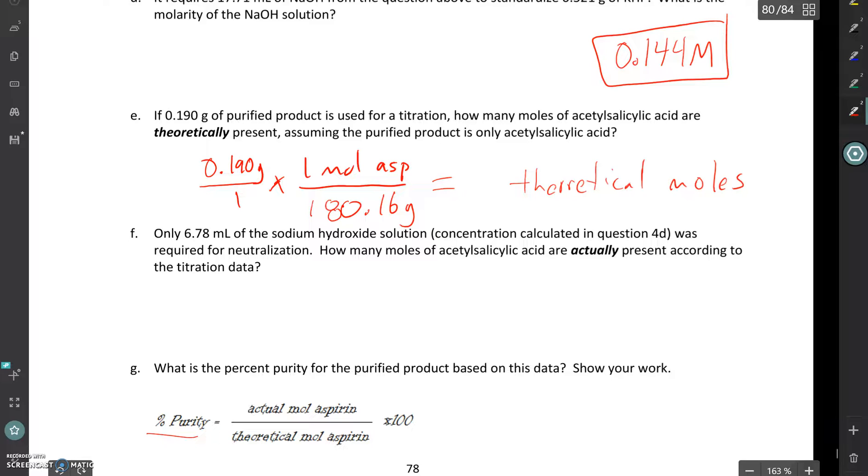So you can go through and do the calculation and be careful with sig figs. This is giving the theoretical number of moles that are present. If every last molecule that you are putting in for the titration, every last molecule of that 0.190 grams is aspirin. Then we're going to see what's actually present based on the titration. We're told only 6.78 milliliters of sodium hydroxide solution using the concentration we calculated up in 4D was required for neutralization. How many moles of acetylsalicylic acid are actually present according to the titration data?